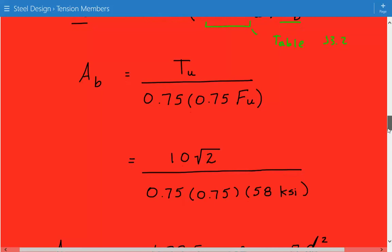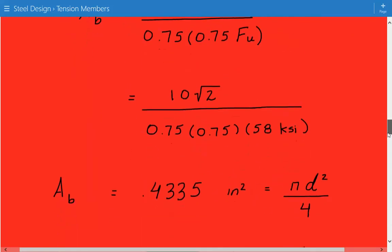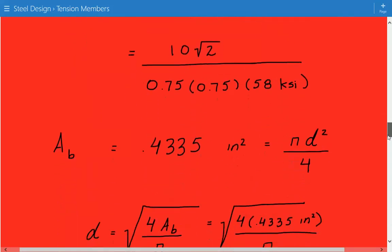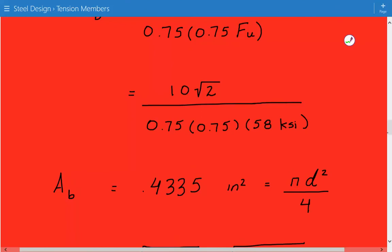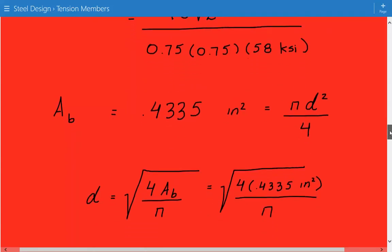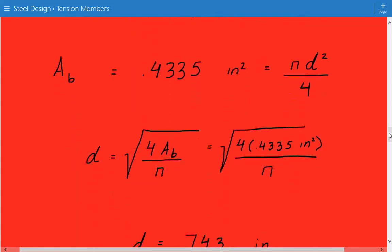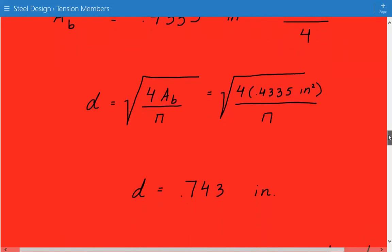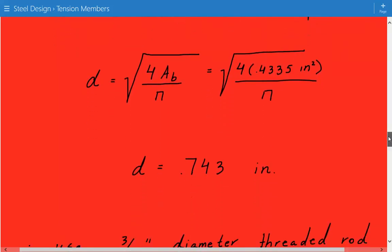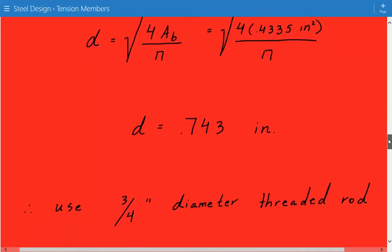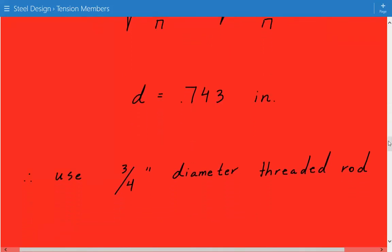And then we have AB here. So we rearrange this equation and we solve for AB, and we find that AB equals 0.4335 inches squared. And the formula for the cross-sectional area is equal to pi D squared over 4. So we rearrange this equation and we solve for D, so the diameter. So the diameter is equal to the square root of 4 times the cross-sectional area divided by pi. And we plug in the numbers and we find that the minimum required diameter is equal to 0.743 inches. So for design purposes, we're going to use a 3/4 inch diameter threaded rod.